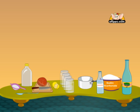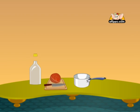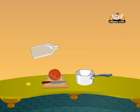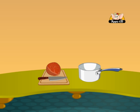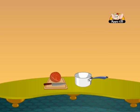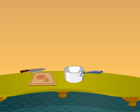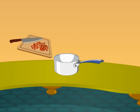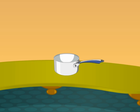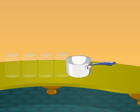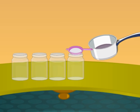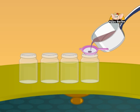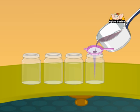Heat some distilled water in a saucepan. Cut the red cabbage into small pieces and add the cabbage to the saucepan. Now let the cabbage water cool. After the cabbage water cools, strain it into four small jars to test various substances.